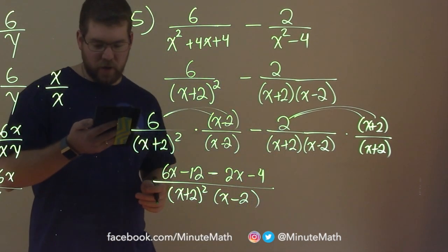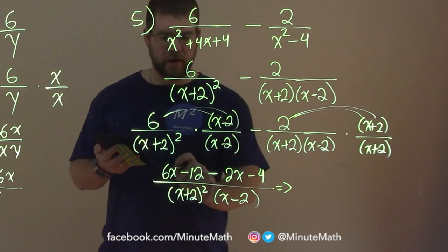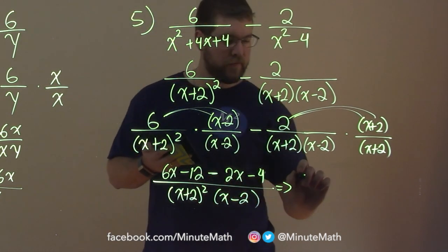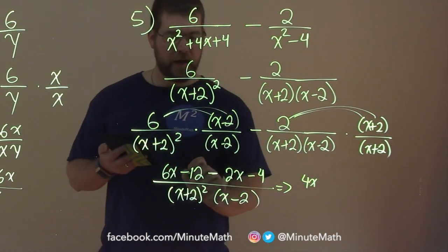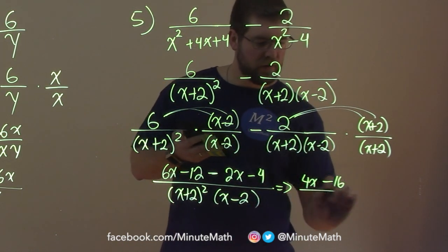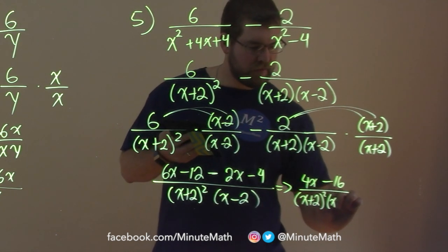Now we just have to combine our like terms. So let's fit that here. 6x minus 2x in the numerator is a 4x. And we have minus 12 and minus 4 is a minus 16 over the denominator, which is just x plus 2 squared and x minus 2.